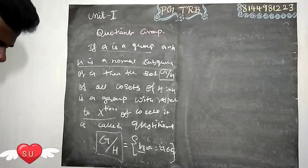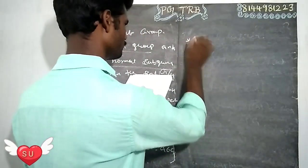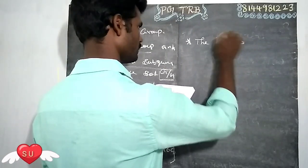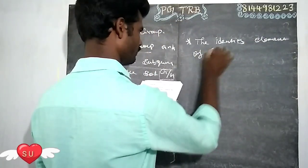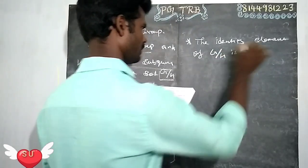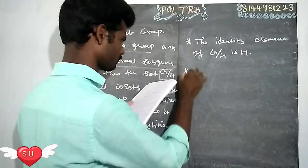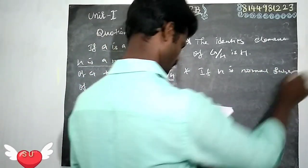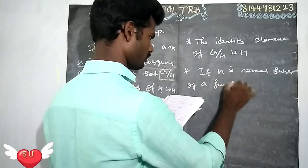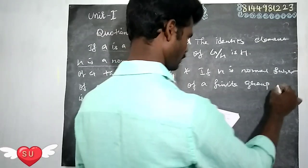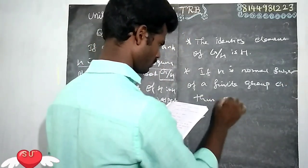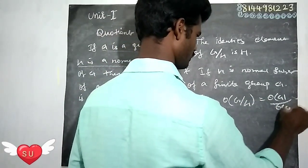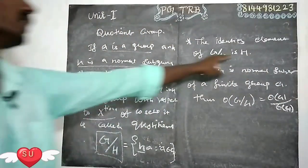Next, we will have the properties. The identity element of G divided by H is H. That is, the identity element of the quotient group G/H is the coset H itself.